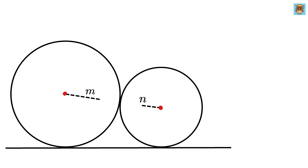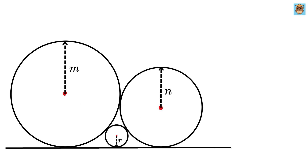Before we begin, let me tell you a property of externally touching circles: when you connect their centers, the distance between the centers of any two externally touching circles becomes the sum of their radii. So let us first connect the centers of both these circles.